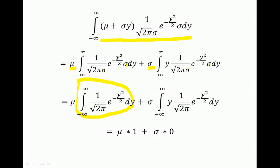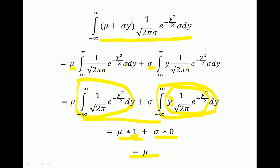Integrating the standard normal PDF from negative infinity to infinity gives one, since all probabilities must sum to one — so that term simplifies to μ times one. The remaining term is y times the standard normal PDF, which is just the expectation of a standard normal random variable, equal to zero. Therefore the whole expression simplifies to μ, confirming that E[X] = μ.